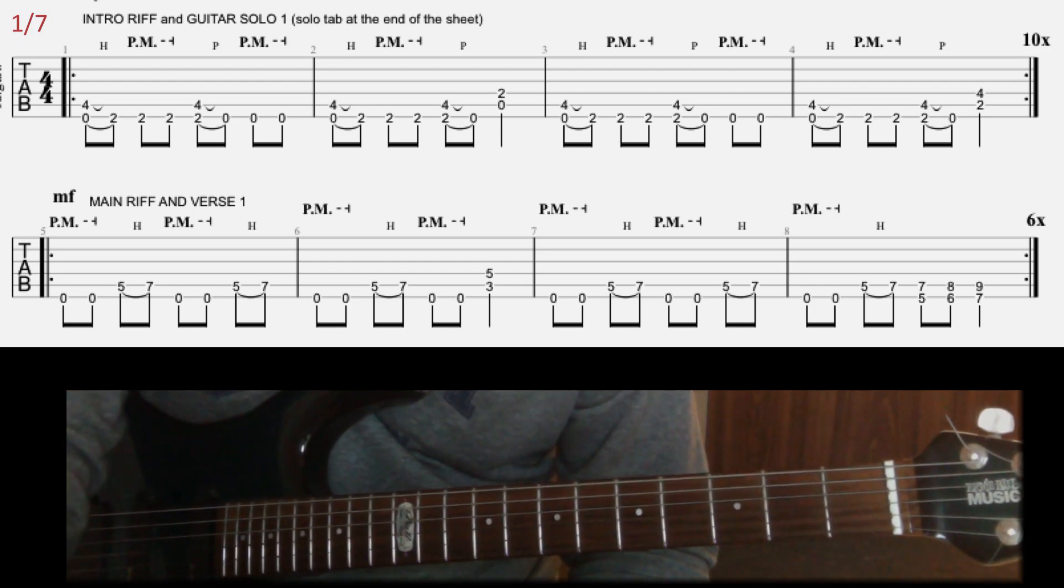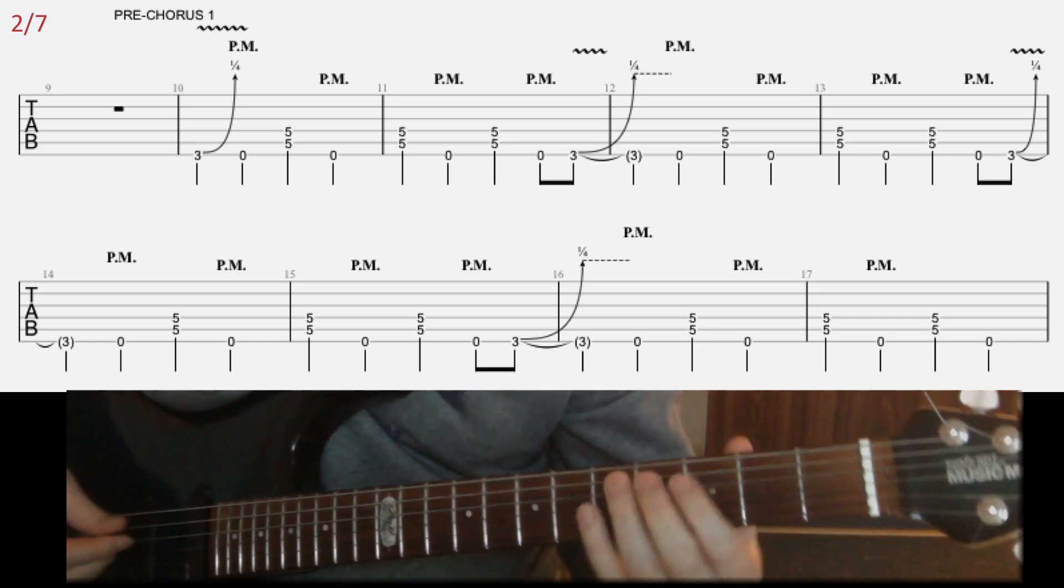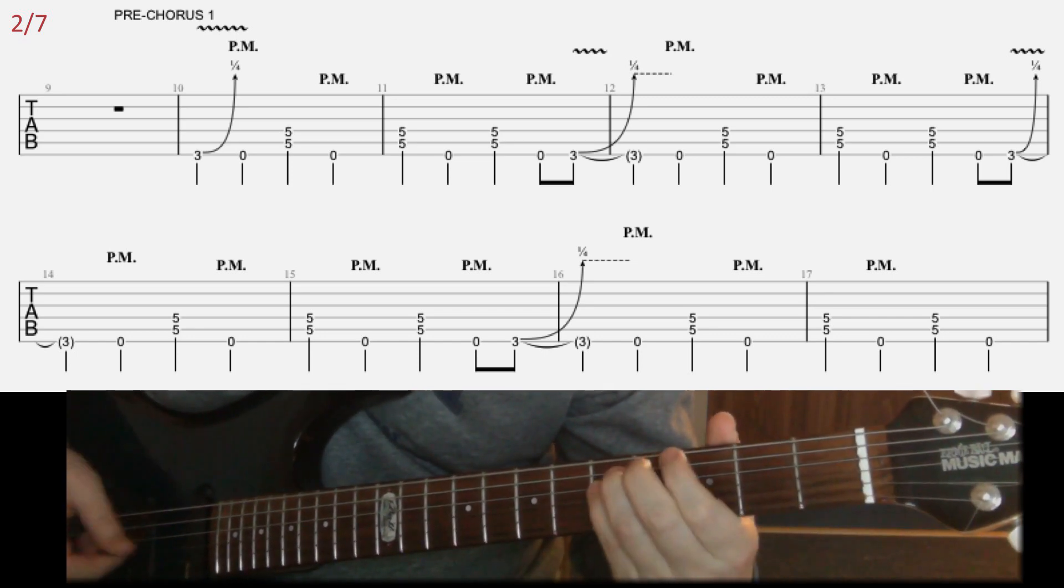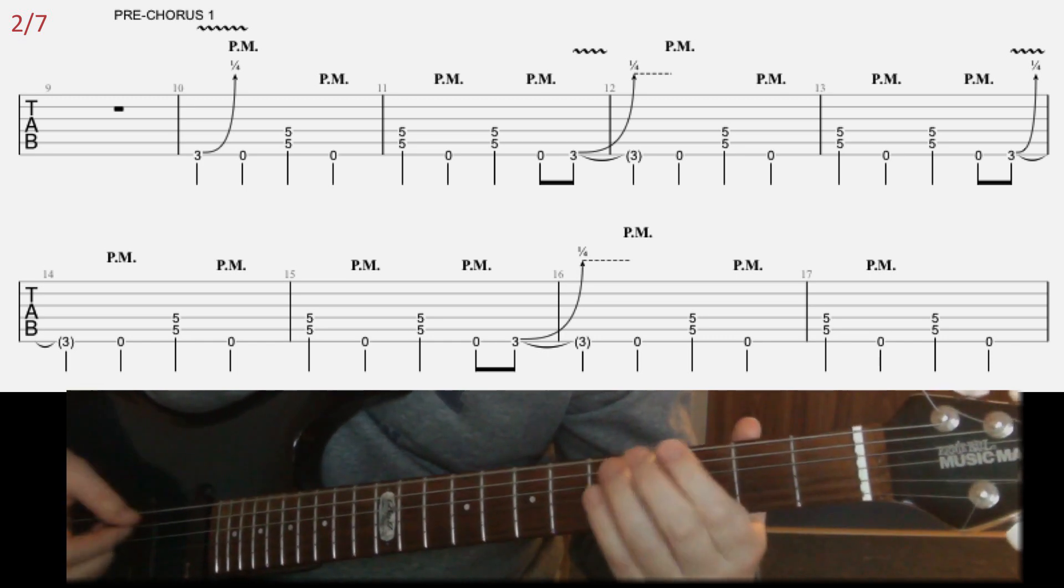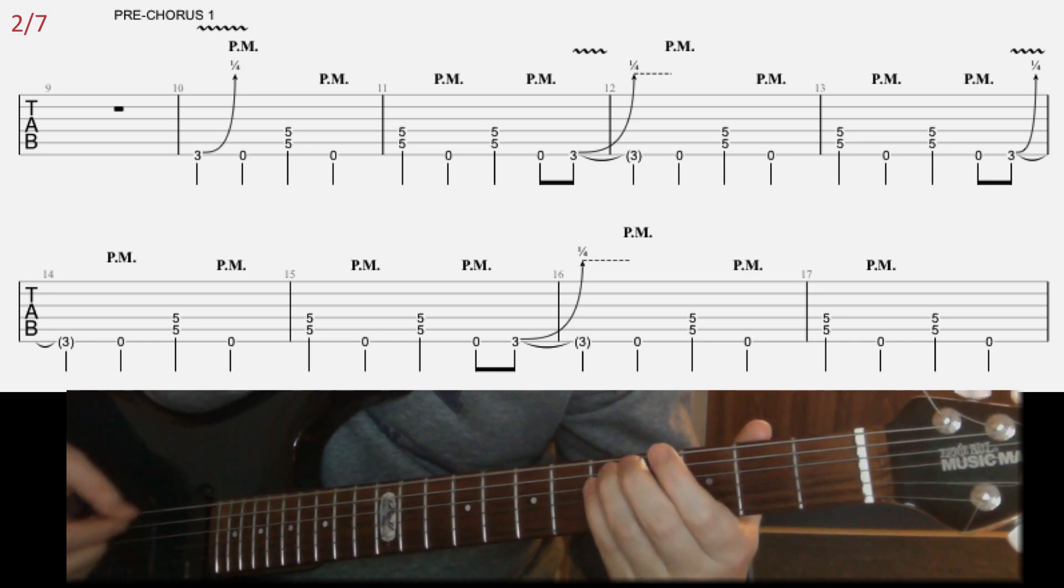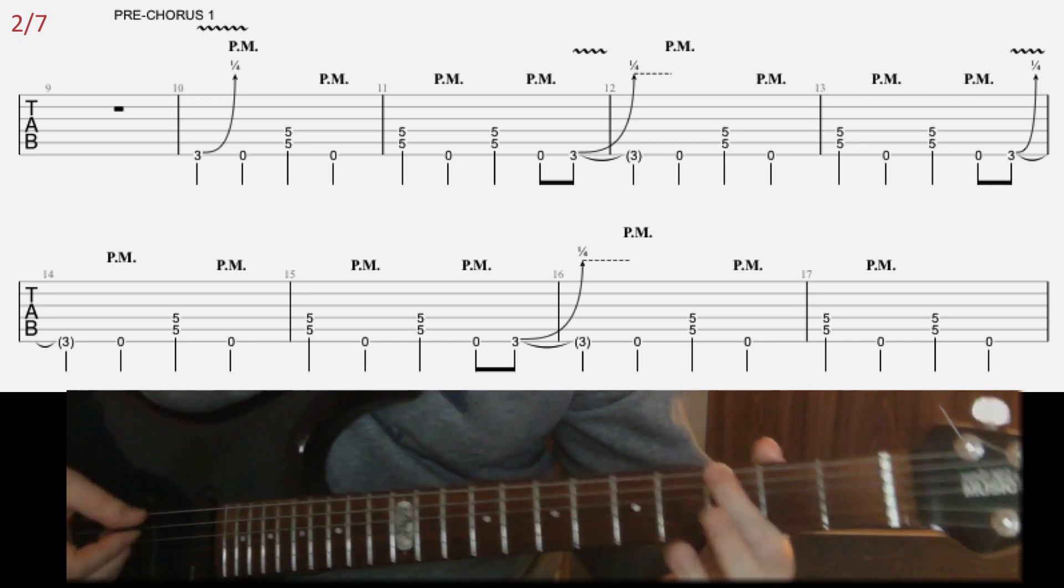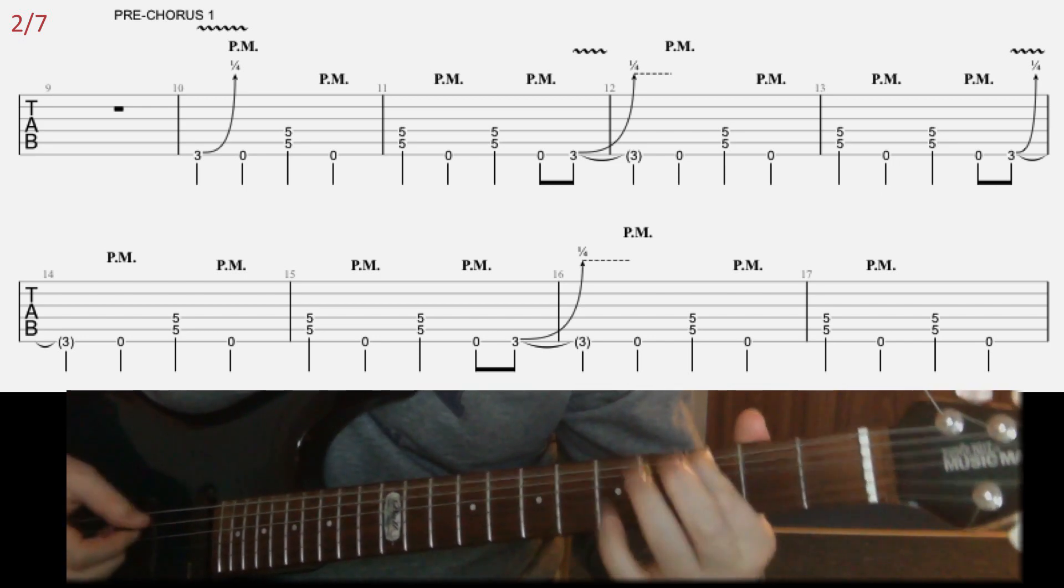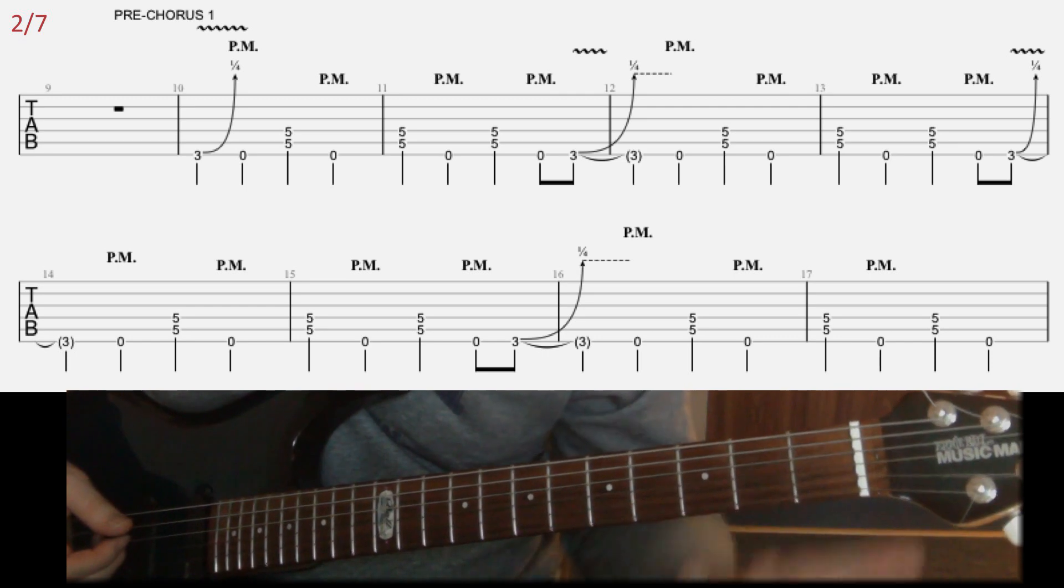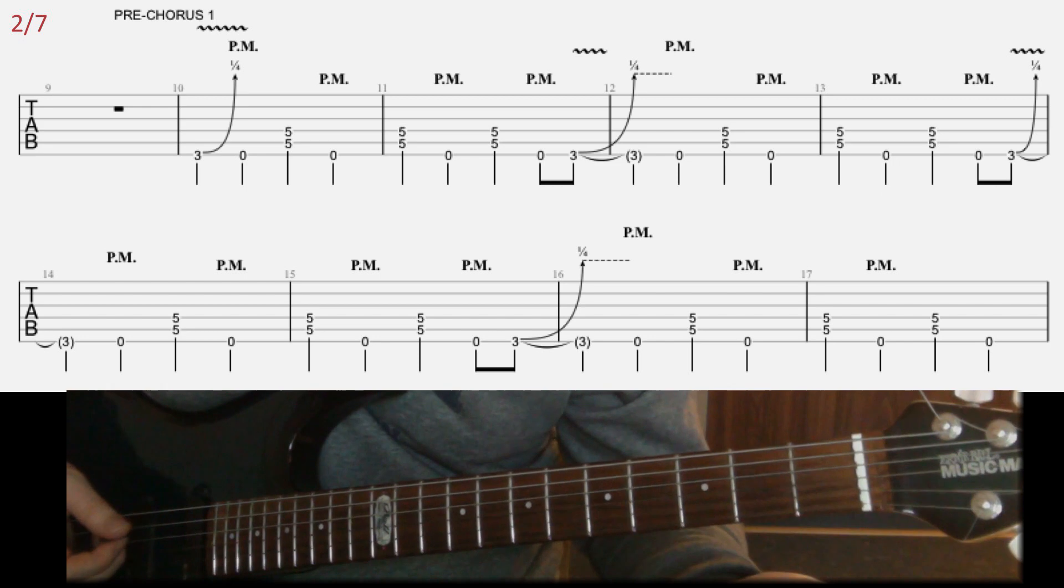Alright, let's continue on to the pre-chorus. And here in the pre-chorus, I'm gonna play this. Alright, so basically that's a repetitive riff. You're gonna start on the third fret with E, and kind of bend it slightly, and shake it a bit. So that's pretty much it.